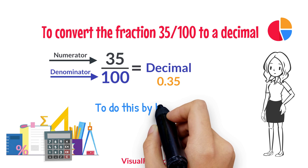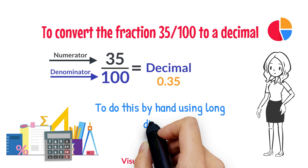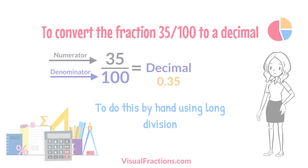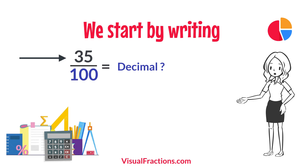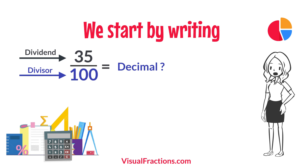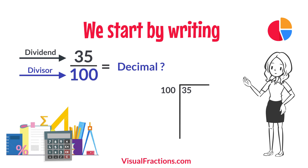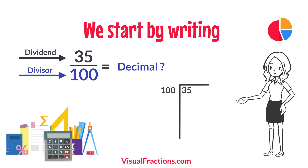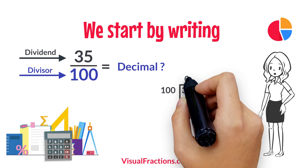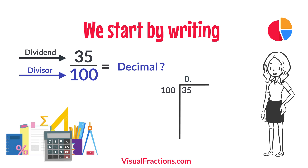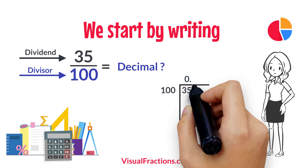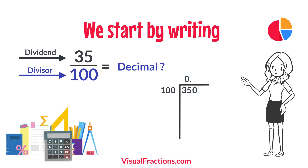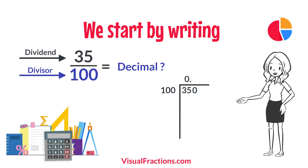To do this by hand using long division, we start by writing 35 as the dividend and 100 as the divisor. Since 100 doesn't fit into 35, we add a decimal point in our answer and append a 0 to 35, making it 350.